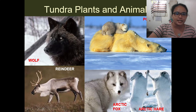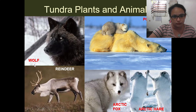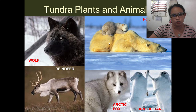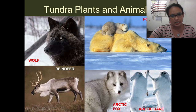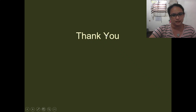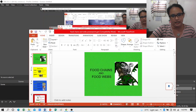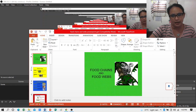Examples of tundra plants and animals include the wolf, reindeer, polar bear, arctic fox, and arctic hare — all animals known to live on frozen land. That will be the end of the biome topic.